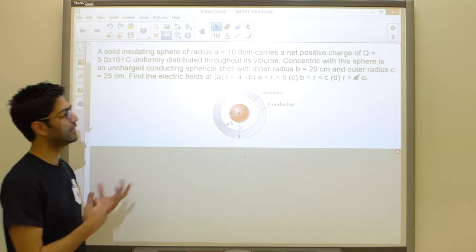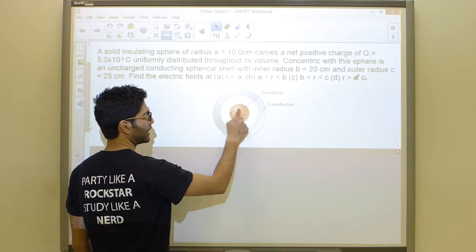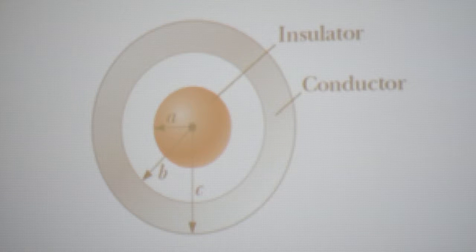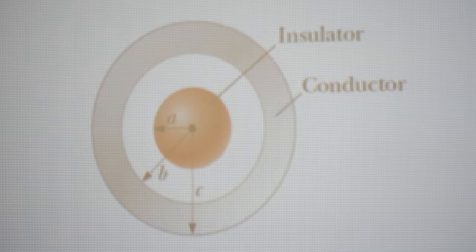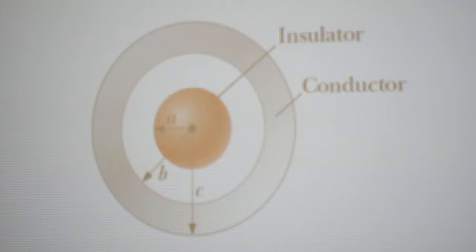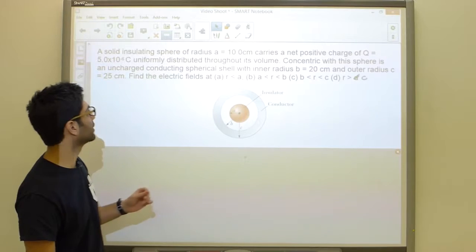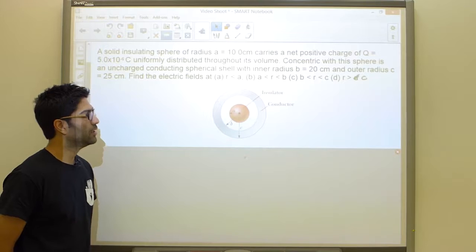The problem is asking us to find the electric field somewhere inside the sphere, somewhere in between, and then outside. We should understand that this is an insulator and this is a conductor. For an insulator, charge is distributed throughout its volume, but for a conductor, the charge resides only on the surface. The conductor is uncharged, so we do not place any charge on it.